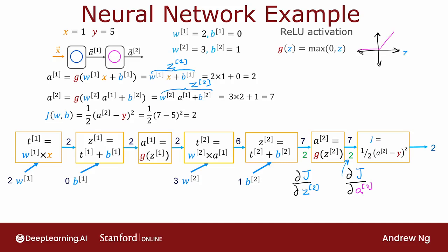Because if z goes up by epsilon, you can show that for the current setting of all the parameters, a2 will go up by epsilon, and therefore j will go up by 2 times epsilon. So this derivative is equal to 2. And so on, step by step, we can then find out that the derivative of j with respect to b2 is also equal to 2. The derivative with respect to t2 is equal to 2, and so on and so forth, until eventually you've computed the derivative of j with respect to all the parameters w1, b1, w2, and b2. And so that's backprop.